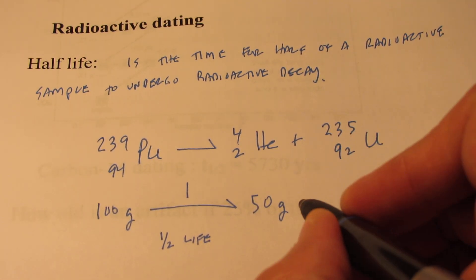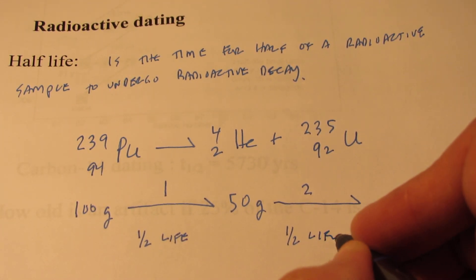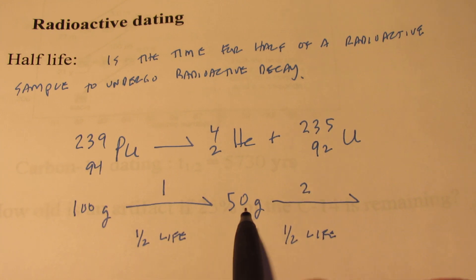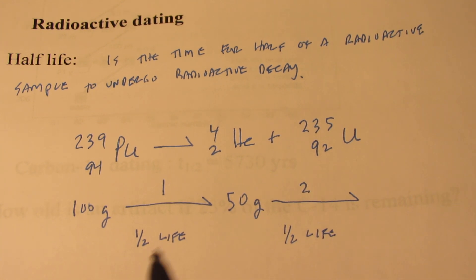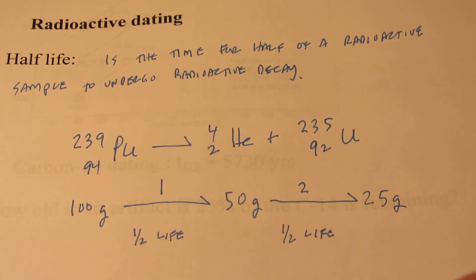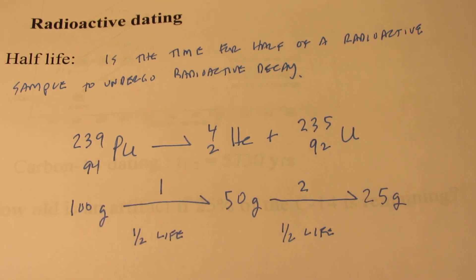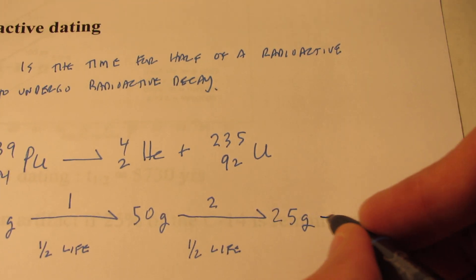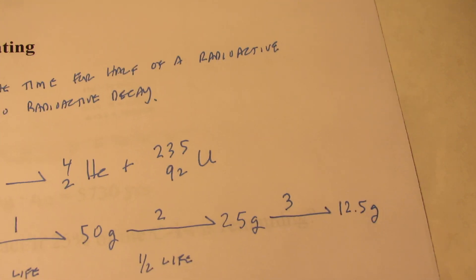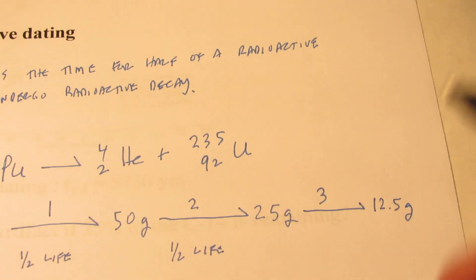What if this went through a second half-life? How much would remain? Well, the definition is the time for half of it to decay. So if we went from 100 to 50, that's one half-life. If we go from 50 to 25 grams, that would be two half-lives. And two half-lives would take exactly twice the amount of time as one half-life. After three half-lives, we would have 12.5 grams remaining. After four half-lives, you'd have 6.25 grams remaining, and so on.